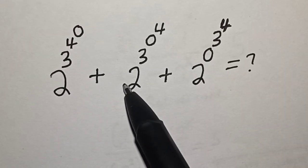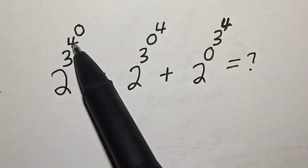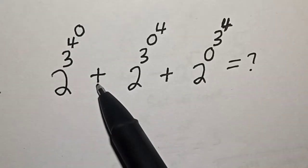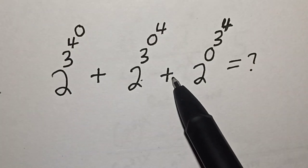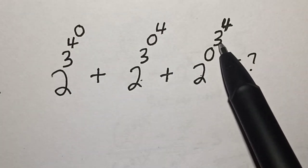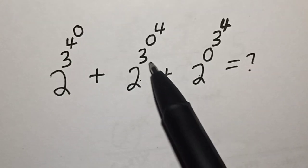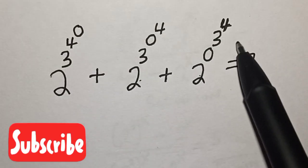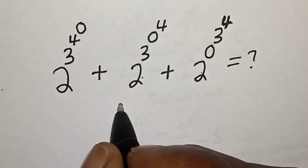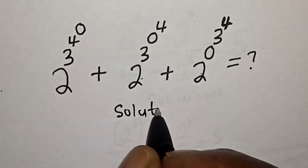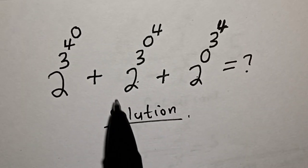Hi everyone, welcome to my class. In this class we want to evaluate this math problem: 2 raised to power 3 raised to power 4 raised to power 0, plus 2 raised to power 3 raised to power 0 raised to power 4, plus 2 raised to power 0 raised to power 3 raised to power 4. Before we proceed, please don't forget to like, share, comment, and subscribe.